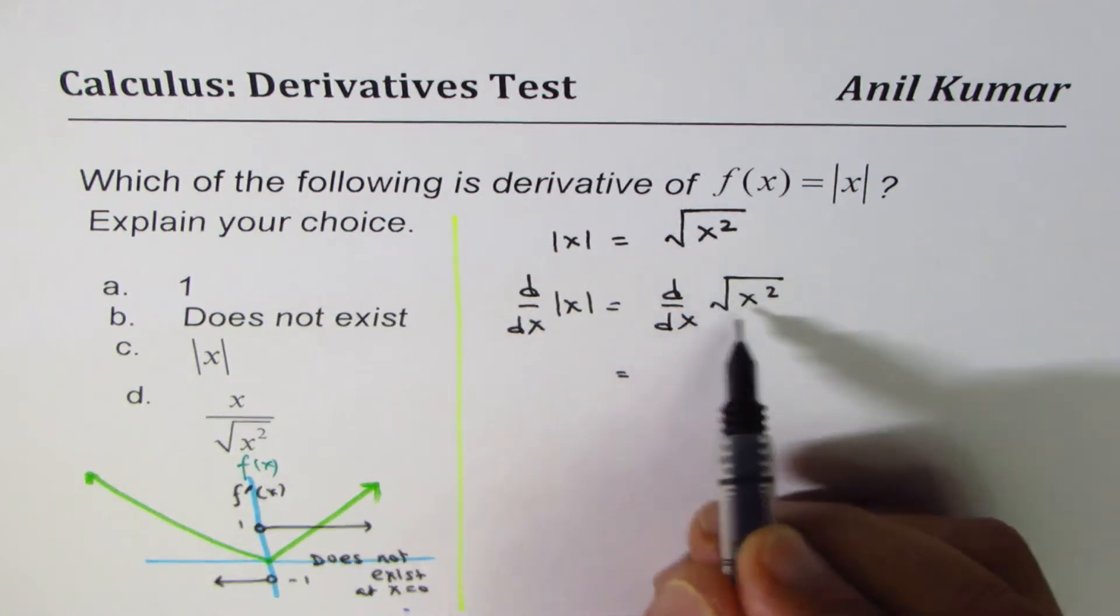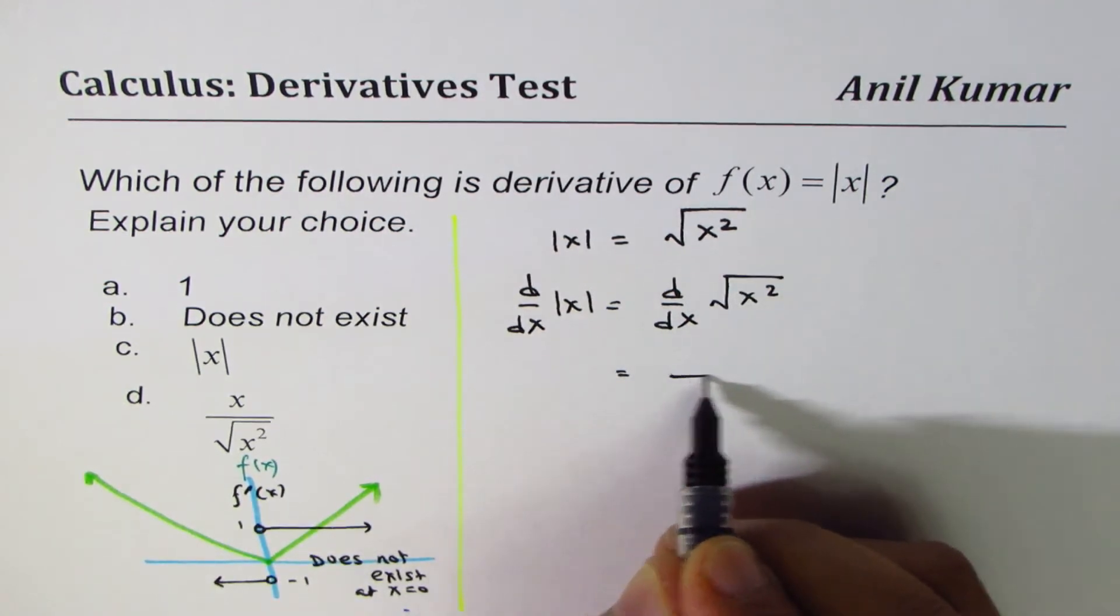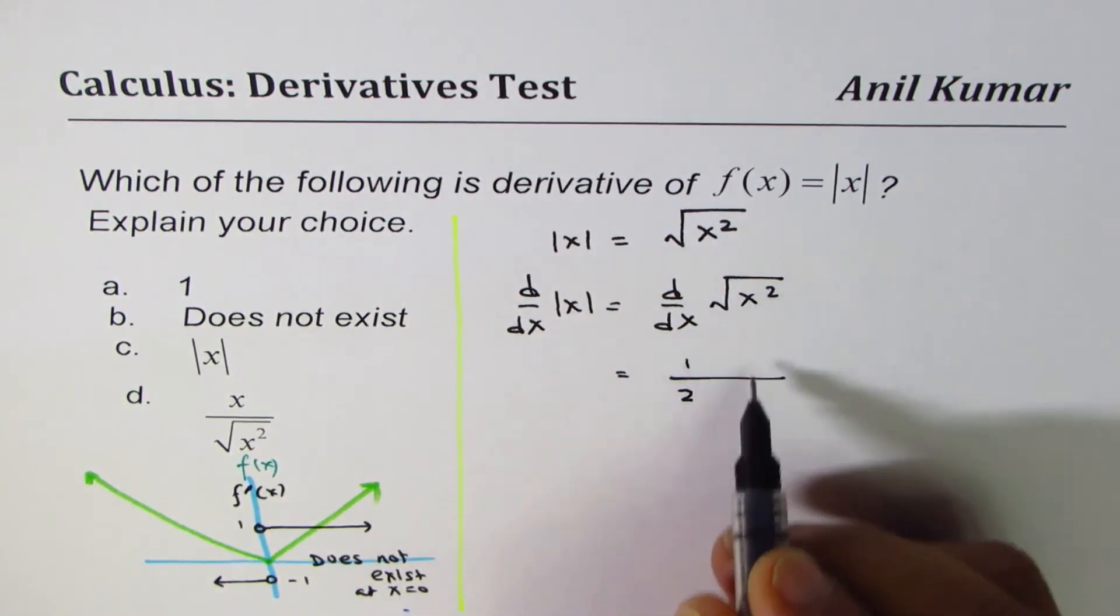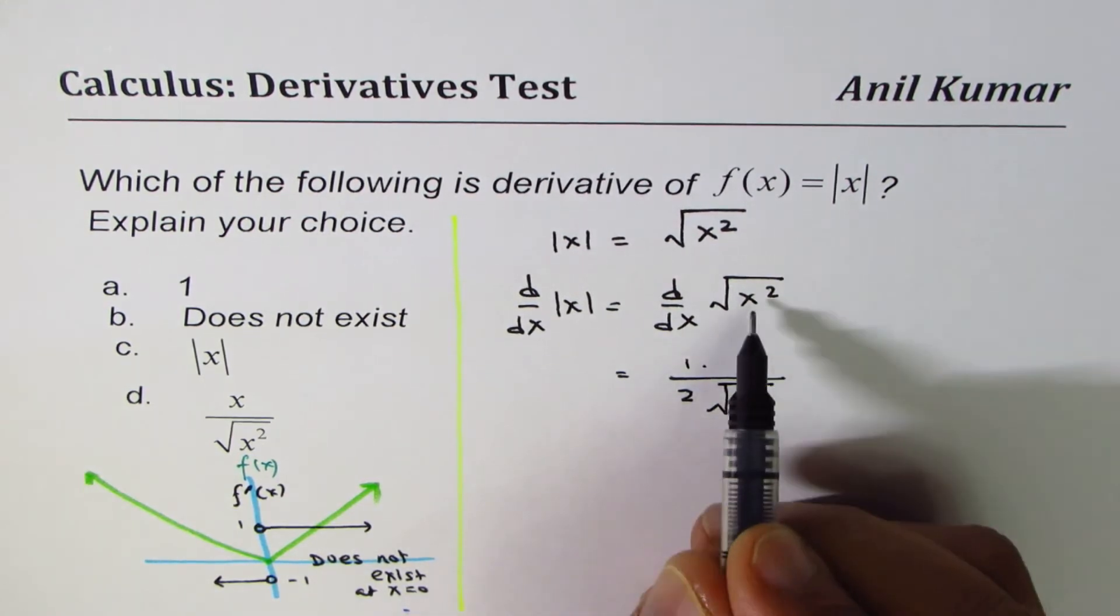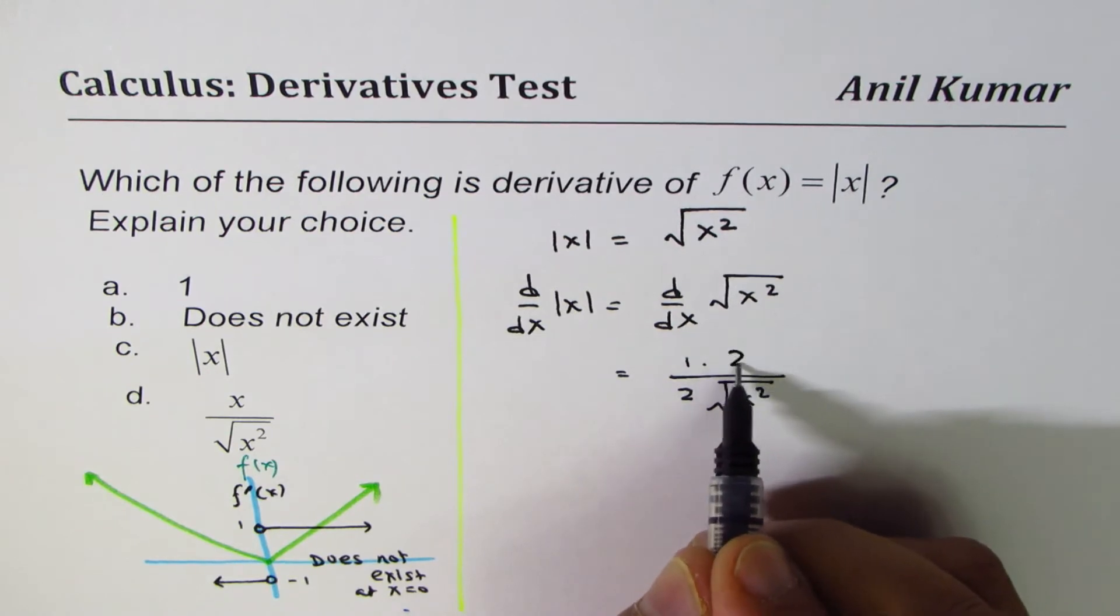Now, derivative of square root, that is half of square root of x squared, times derivative of inside function, which is 2x.